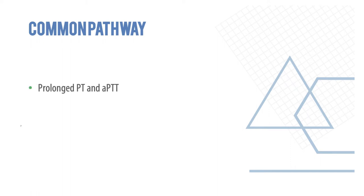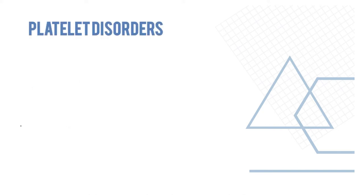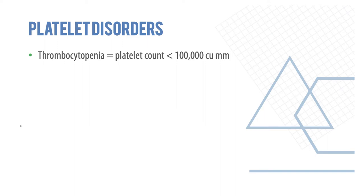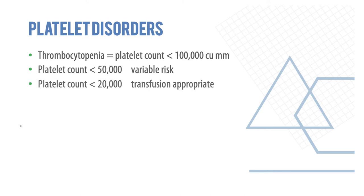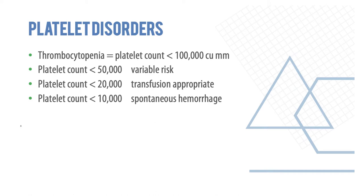In the common pathway, both PT and aPTT are prolonged. Thrombin and fibrinogen form an insoluble clot causing stoppage of bleeding. Normal platelet count is between 150,000 and 400,000 per cubic millimeter. Less than 100,000 is classified as thrombocytopenia. Less than 50,000 carries significant risk; less than 20,000 usually requires transfusion; and less than 10,000 may cause spontaneous hemorrhage.